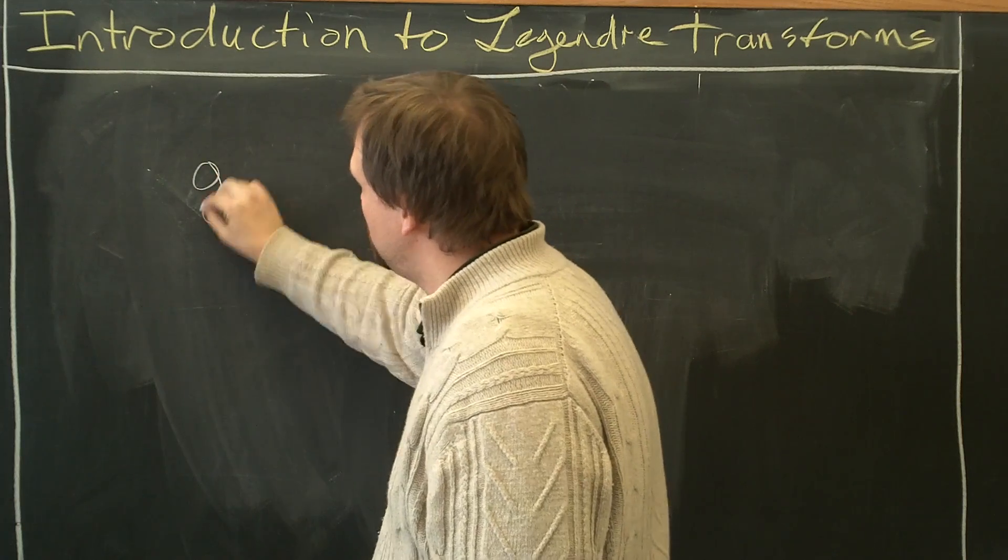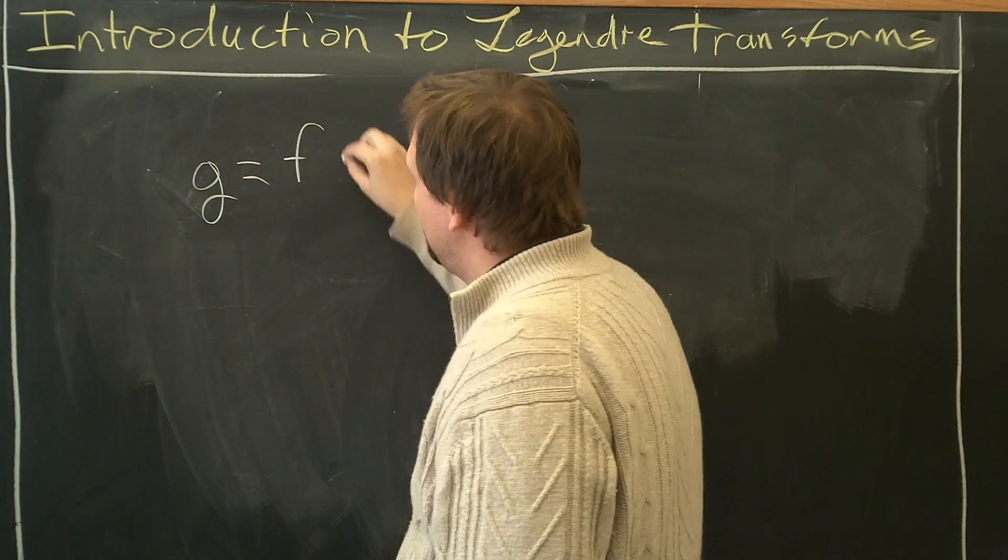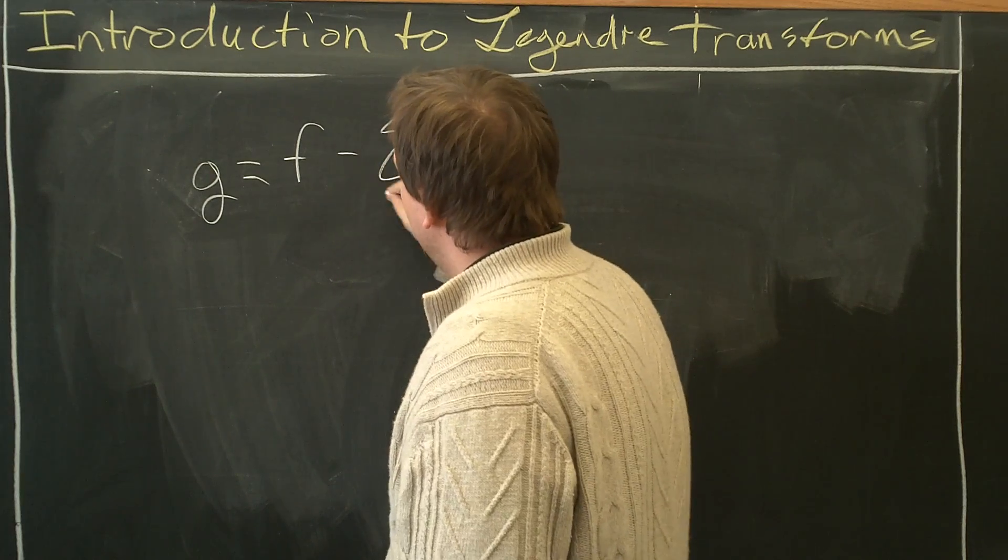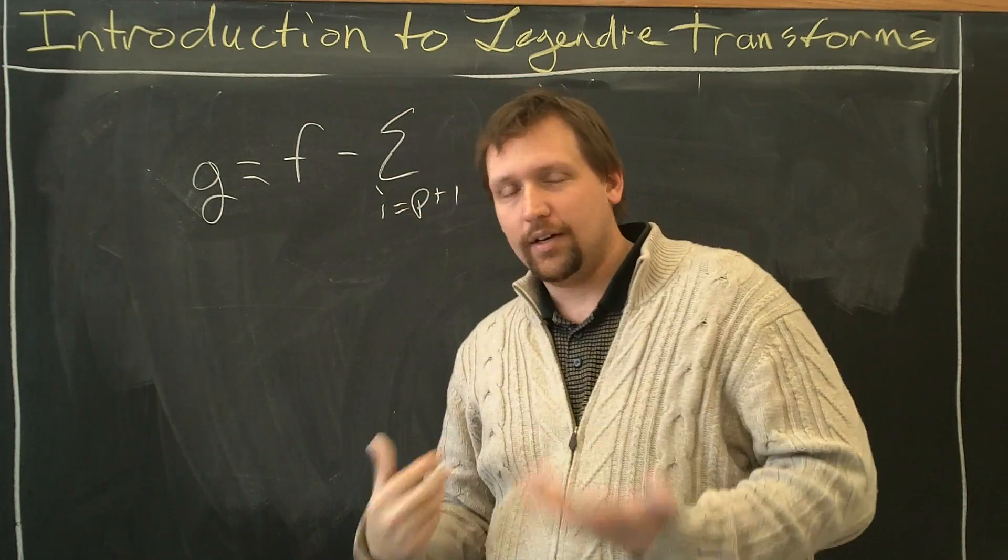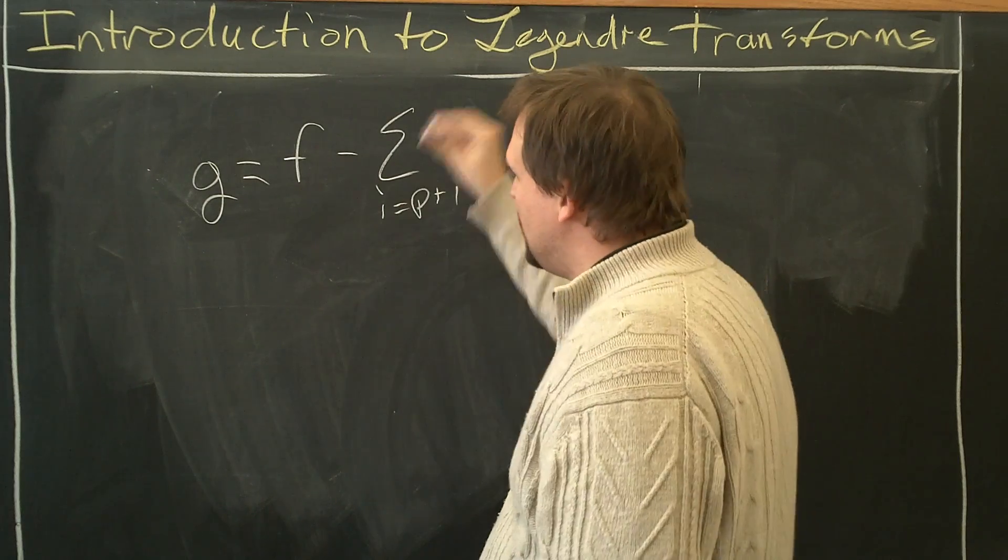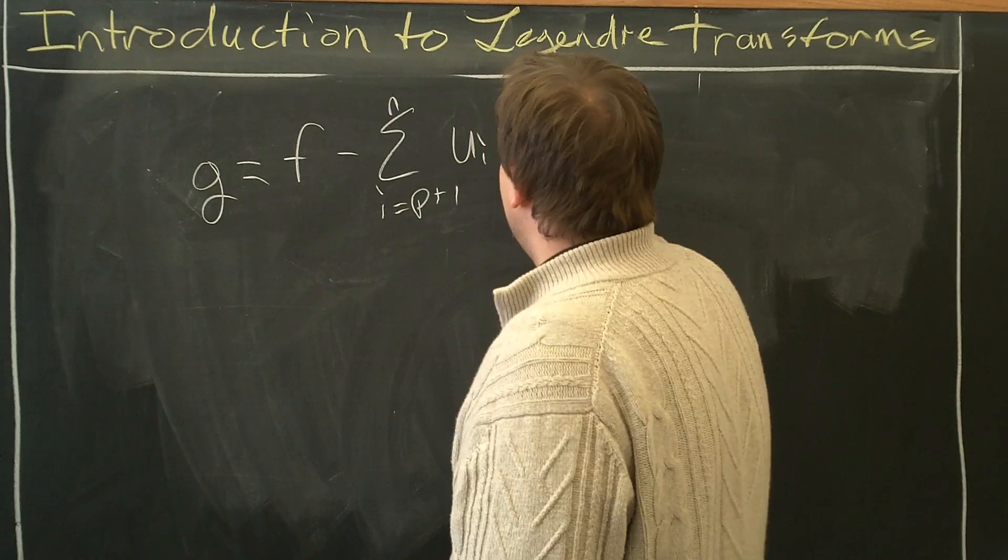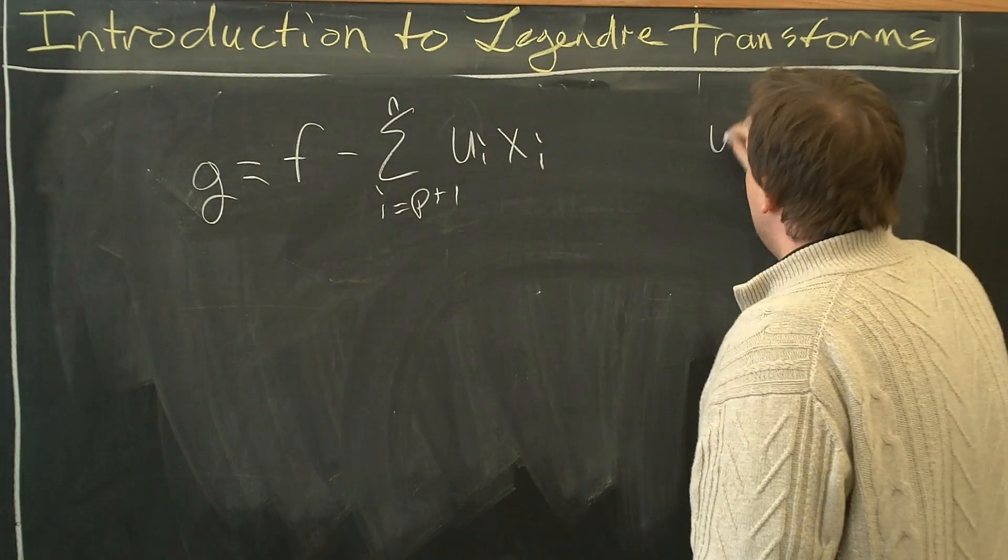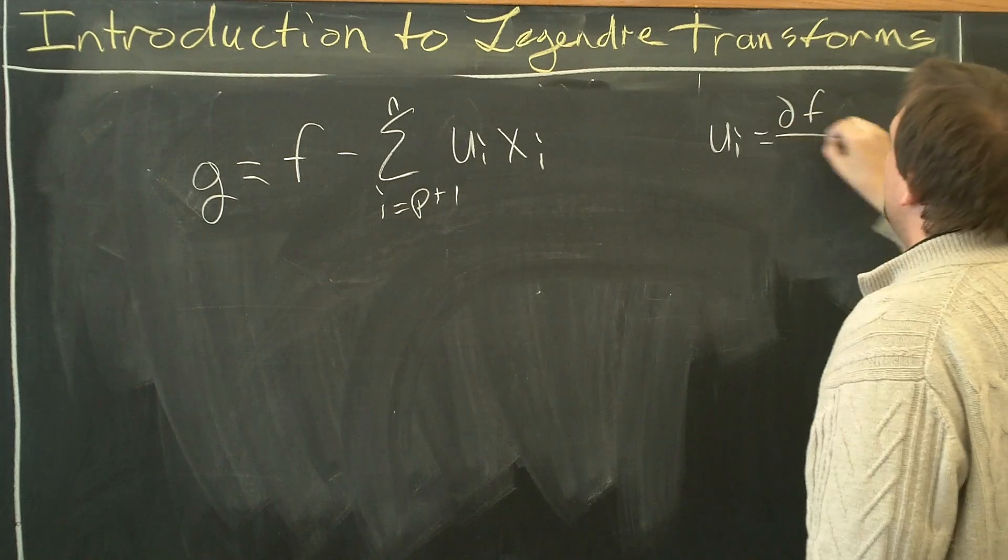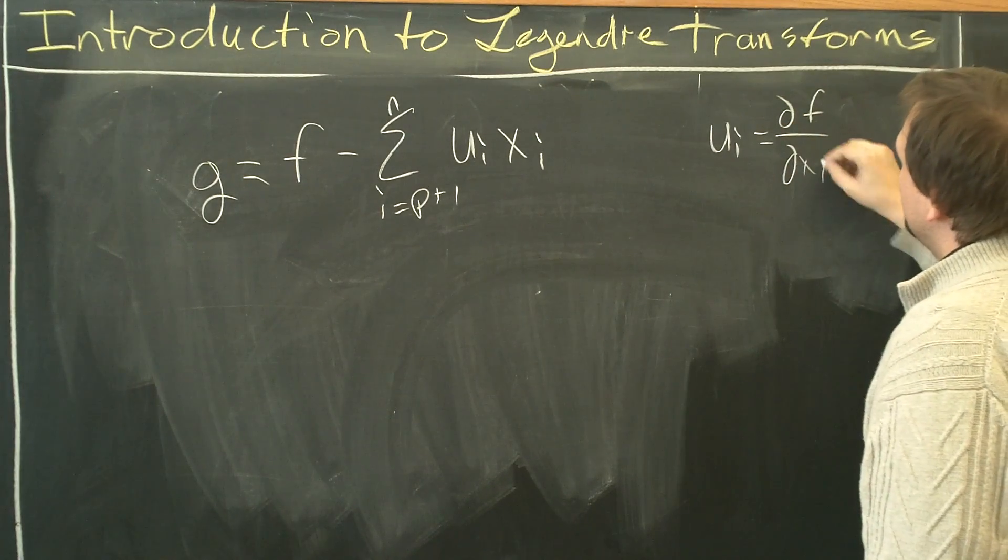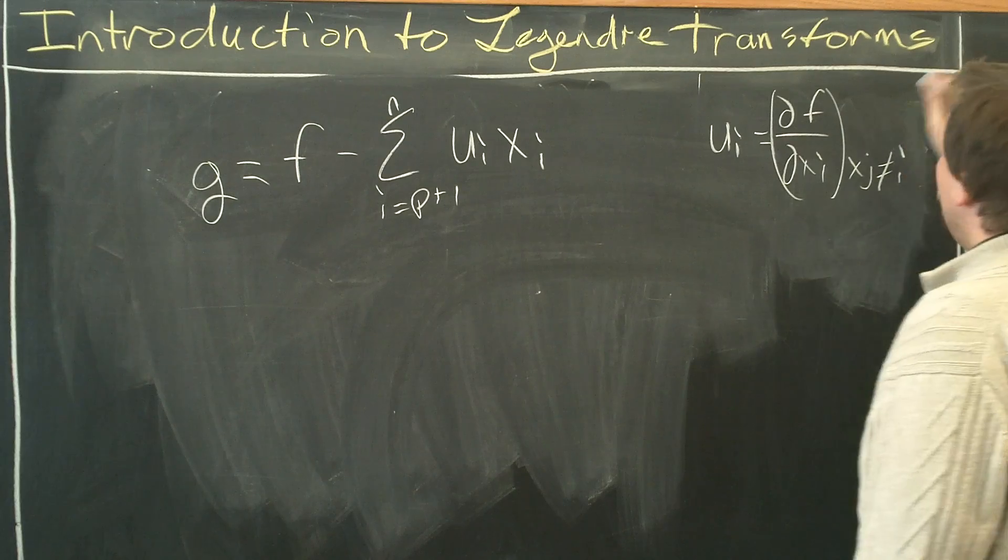Let's define the new function g equals the original function f minus the summation for a certain number of the variables in your original equation f up to p of ui xi. Let me rewrite down what ui's definition is. ui is defined as partial f partial xi with xj not equal to i.